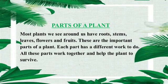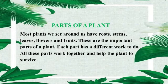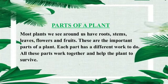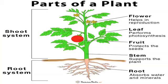All these parts work together and help the plant to survive. جادا تر پودوں کو جو ہم اپنے آس پاس دیکھتے ہیں، ان کی جڑیں، تنے، پتے، پھول اور پھل ہوتے ہیں۔ یہ ایک پلانٹ کے اہم حصے ہیں۔ ہر حصے کے کرنے کے مختلف کام ہیں۔ یہ سارے parts مل کر کام کرتے ہیں اور پلانٹ کو زندہ رہنے میں مدد دیتے ہیں۔ Look at the picture: parts of a plant.